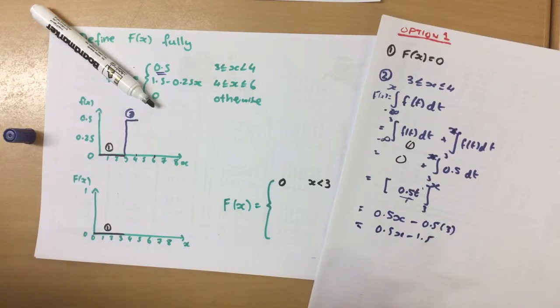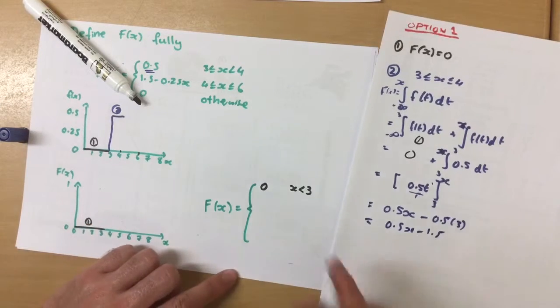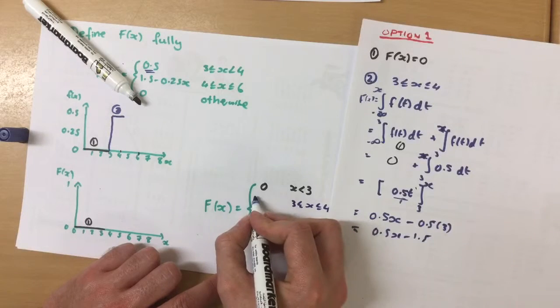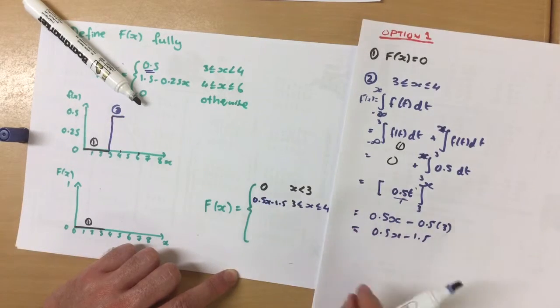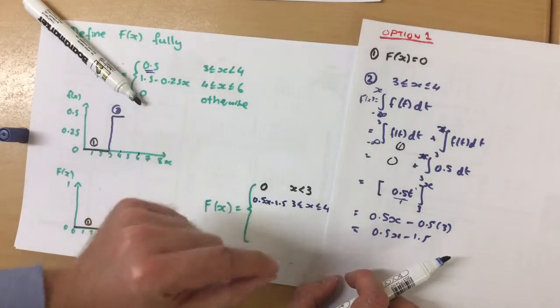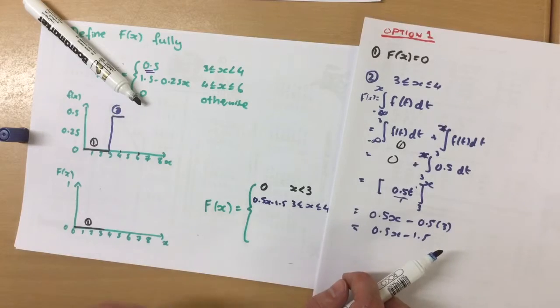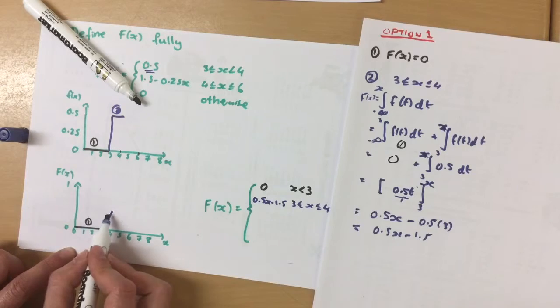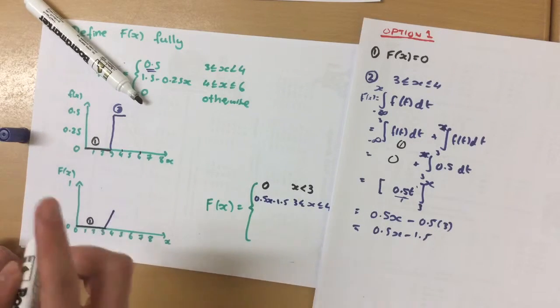So this describes what happens between 3 and 4. Now, if we had put 4 in, that would give us our value at the end of this section. And we need that, because we need to know what height this line ends at. What's the probability at the end of this line?